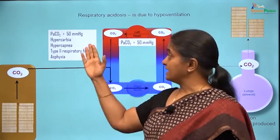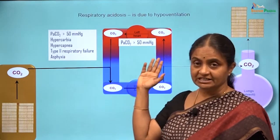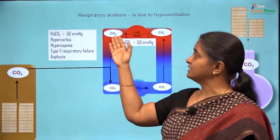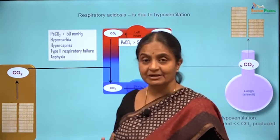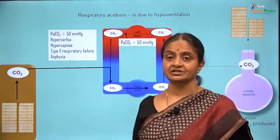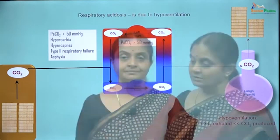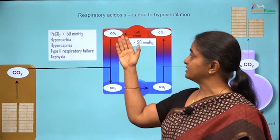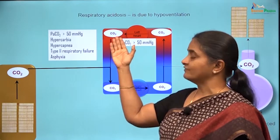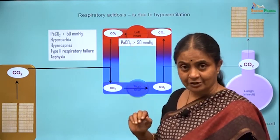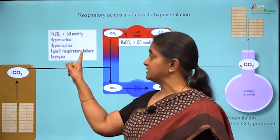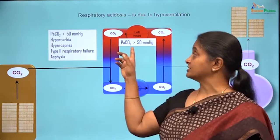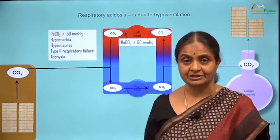Carbon dioxide levels are normally 40 mmHg in arterial blood. When we call it respiratory acidosis, the levels have gone up to more than 50 mmHg — that is the clinical definition of hypercarbia. To be technically correct, any acidosis with a carbon dioxide more than 40 to 45 mmHg would be respiratory acidosis, but to call it respiratory failure, the clinical definition is that carbon dioxide must be more than 50 mmHg.